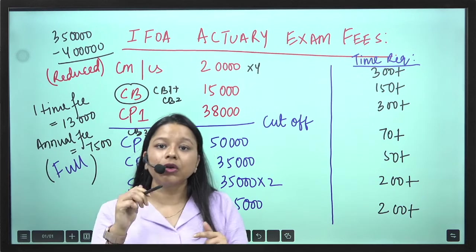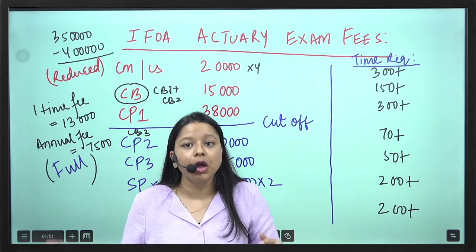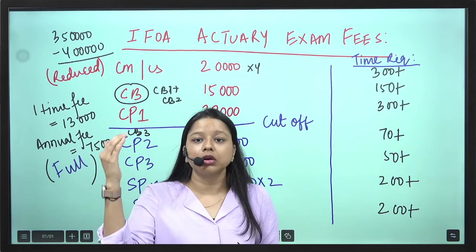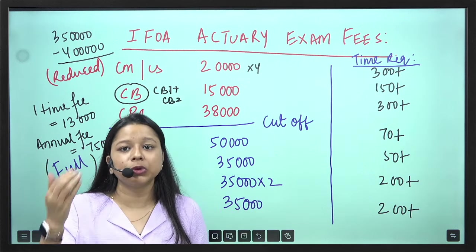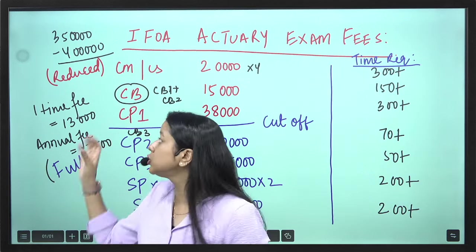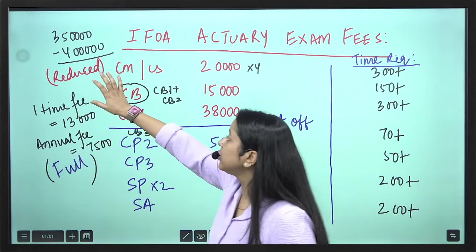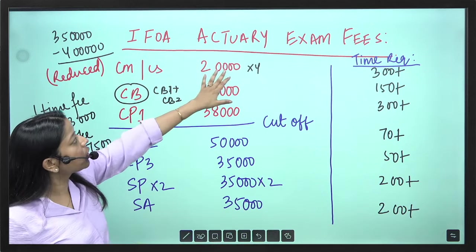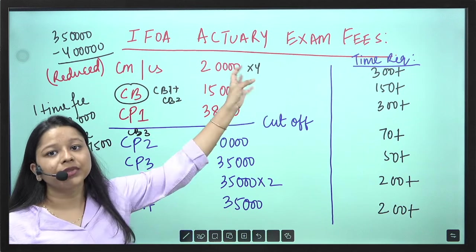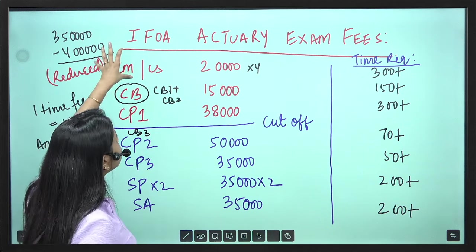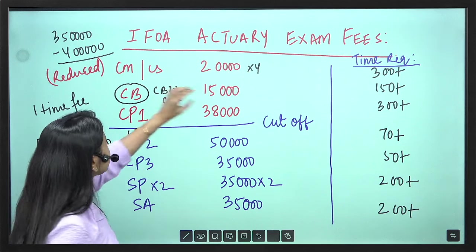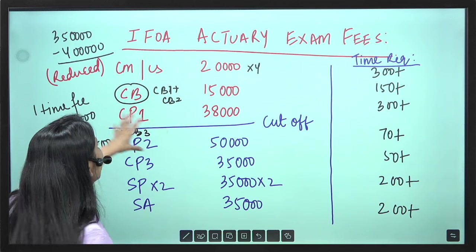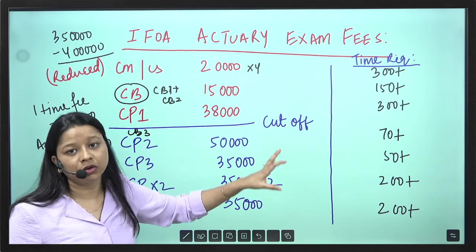So since you do not have any of your own personal income or if your own personal income is below the income level which the IFOA is mentioning, so you will be eligible for the reduced rate. Now if you are eligible for the reduced rate, then it will cost approximately Rs 20,000 for each CMCS papers. For CB papers it will cost around Rs 14,000 to Rs 15,000 and for CP1 it will cost you somewhere around Rs 38,000.